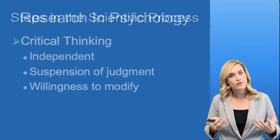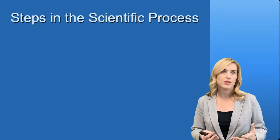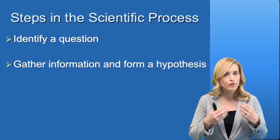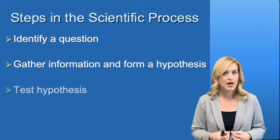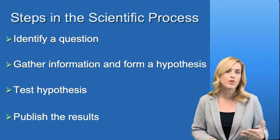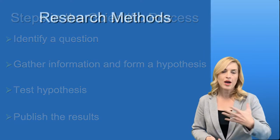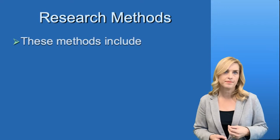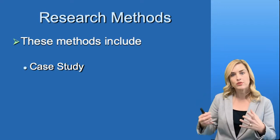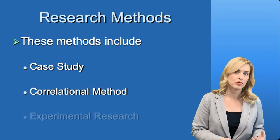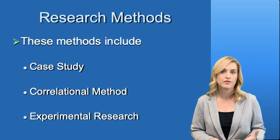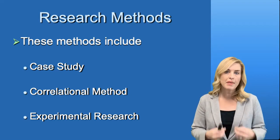We use the scientific process in psychology. We identify a question, gather information and form a hypothesis, test our hypothesis, and publish our results. We're going to talk about some of the processes we use for this scientific method. We might use a case study, the correlation method, or the experimental method. There are other research methods we can use as well, but these are the three we're mainly going to talk about.